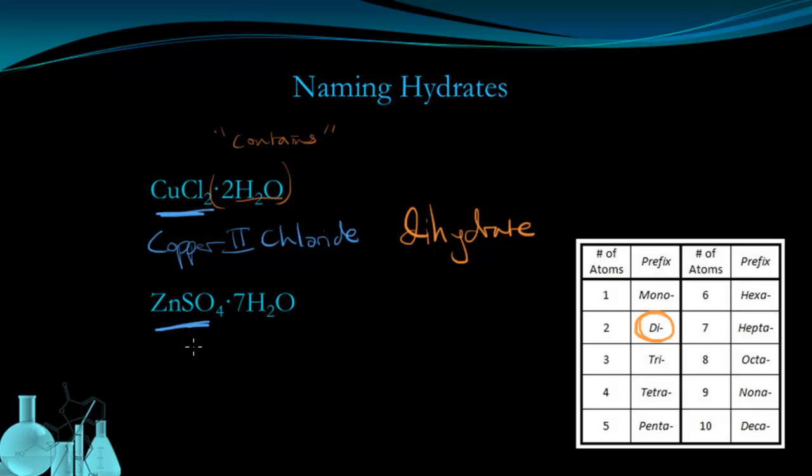Let's name the second example. Zn is zinc. And SO4 we recognize as a polyatomic, and that's called sulfate. So we have zinc sulfate. Now we need to name the hydrated part of this ionic salt. So there are seven waters, which tells us we're going to use this prefix, hepta, for seven.